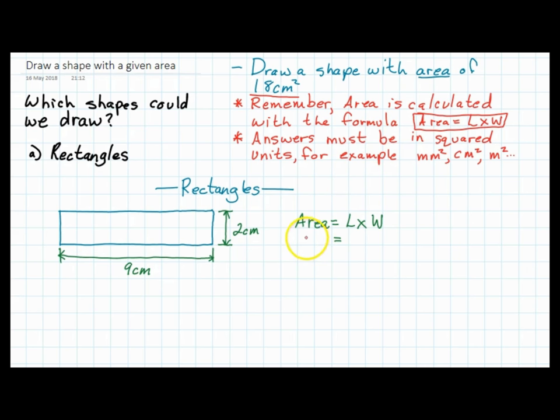You know that all we have to do here is write 18 centimeters squared, and you're basically looking for what two numbers when they multiply together give you 18. Well, if you know your times tables, that'll be pretty easy. There are a variety of different numbers you could use, different combinations.